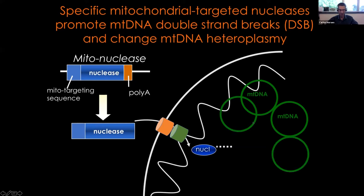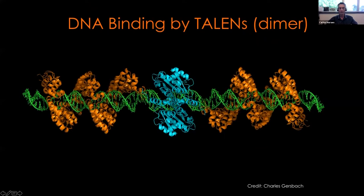The approach we and others have been taking is to use specific nucleases targeted to the mitochondria, hopefully specific enough to cut the mutant mitochondrial DNA but not the wild type. To do that we add a targeting sequence to the nuclease so it goes to the mitochondria, cleaves the mutant DNA, and leaves the wild-type mitochondrial DNA to replicate and make up for the difference. We have been using a gene editing platform known as TALENs, and a group of Michael Mičunek in England use zinc finger nucleases targeted to mitochondria — so there are different platforms.